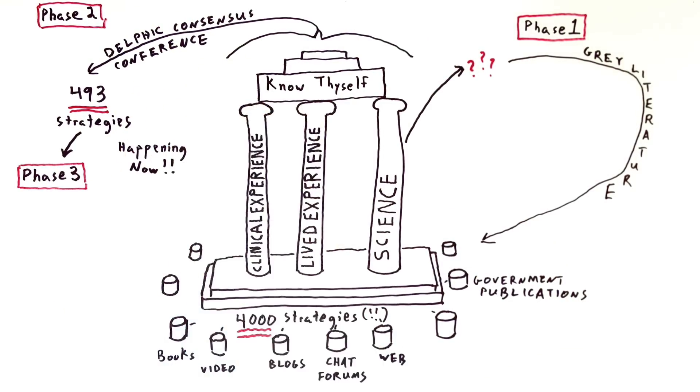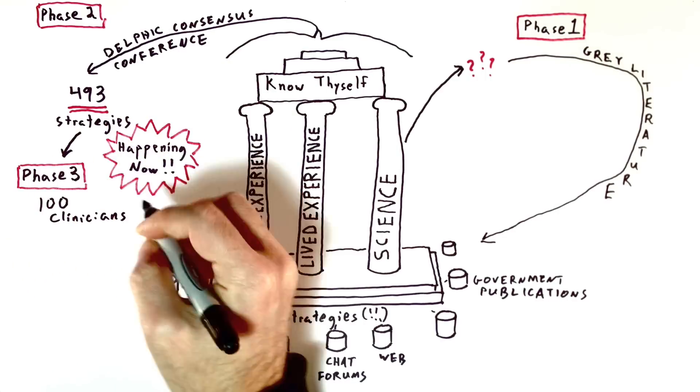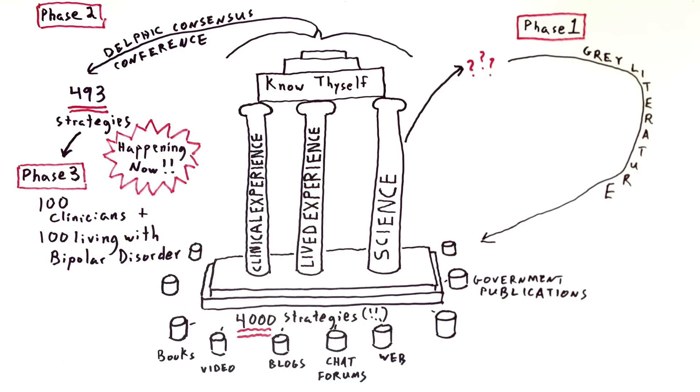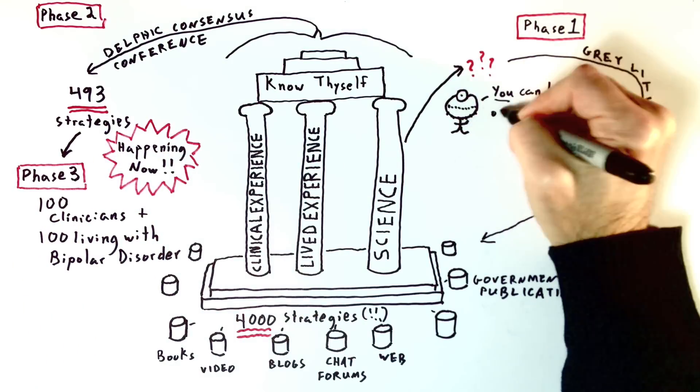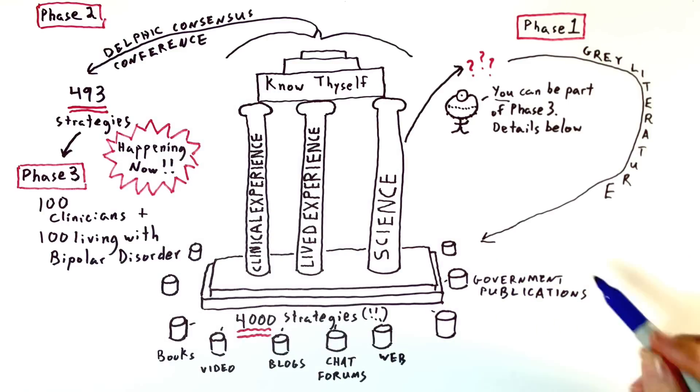And now Phase 3 will test these 493 strategies, using 100 clinicians and 100 individuals living with bipolar disorder to rate these. You can be part of Phase 3, see details below.